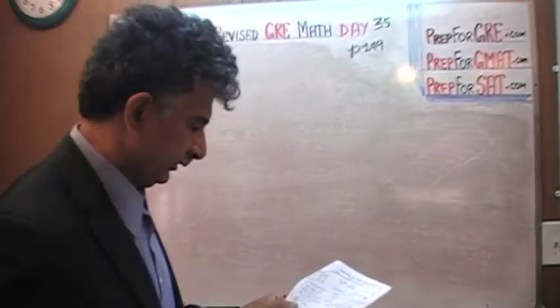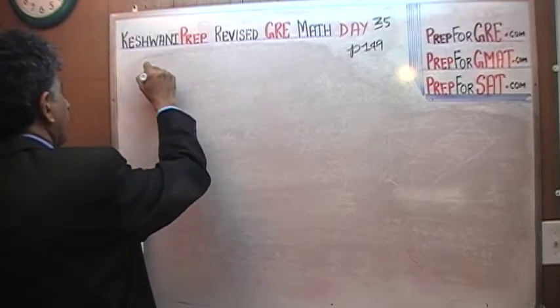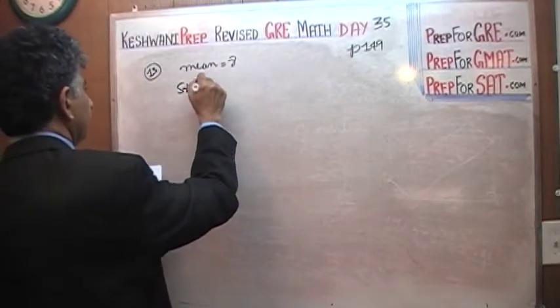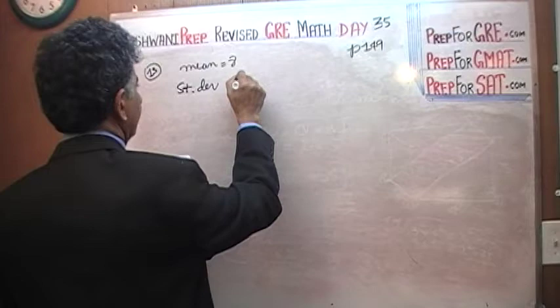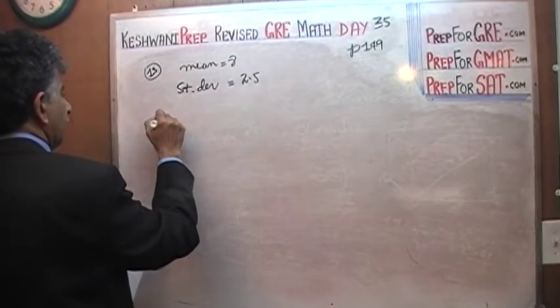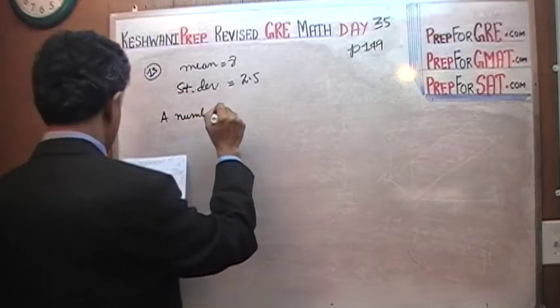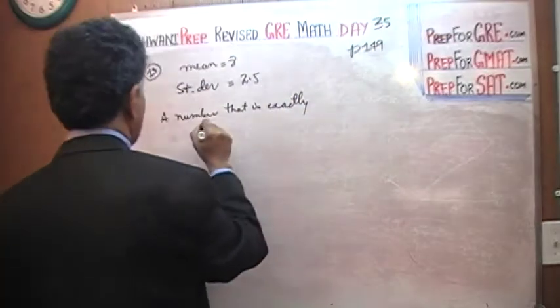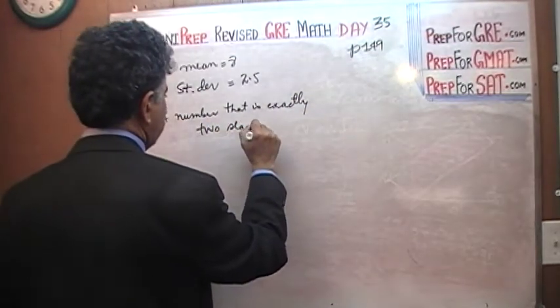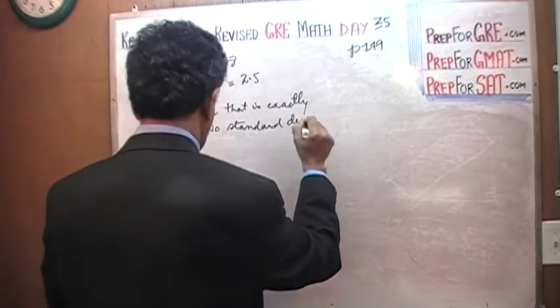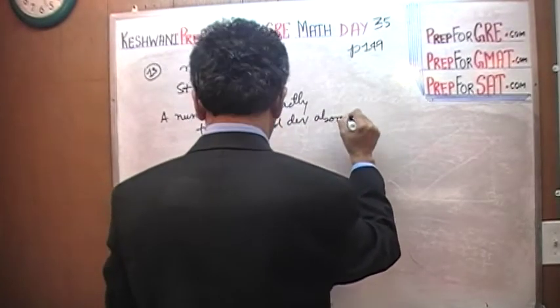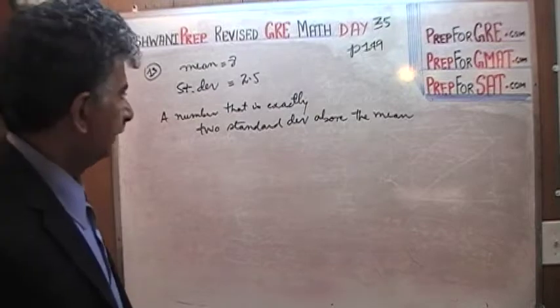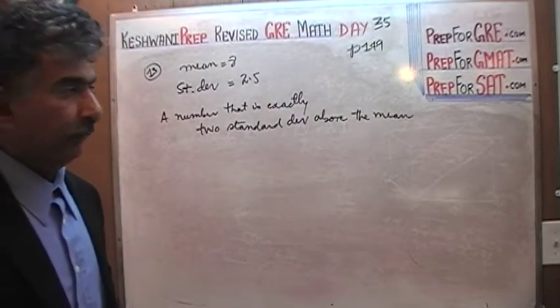Let's do the next problem which is problem number 13. We are told that the mean is 8. We are told that standard deviation, the standard deviation is 2.5. And the question simply is we are asked to find a number that is exactly 2 standard deviation above the mean.